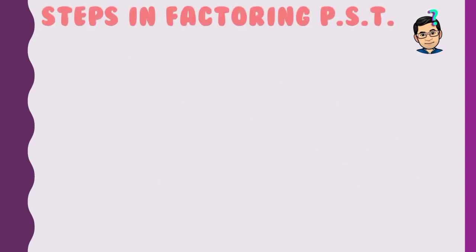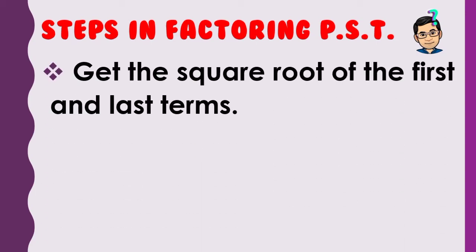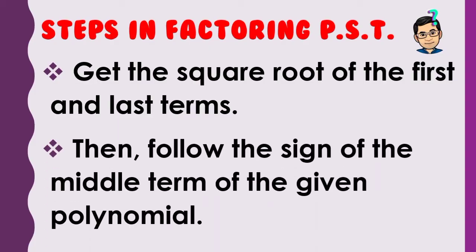Here are the steps in factoring perfect square trinomial — which we've already discussed but will repeat: first, get the square root of the first and last terms; then follow the sign of the middle term of the given polynomial.